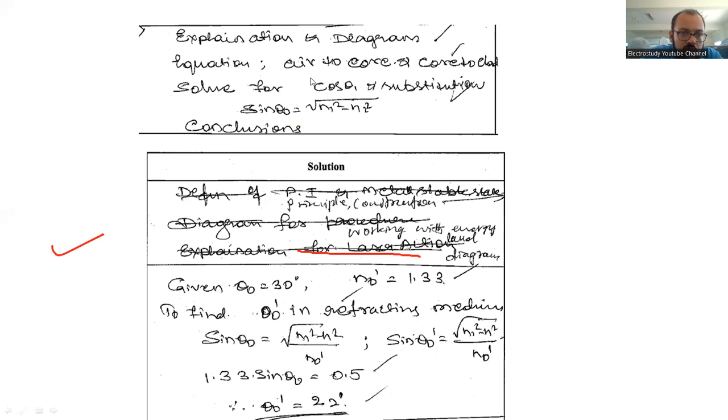So explanation, then suitable equation, and ultimately what you are supposed to do is write this expression. This expression you are supposed to reach and proper conclusion also. Make proper conclusions.